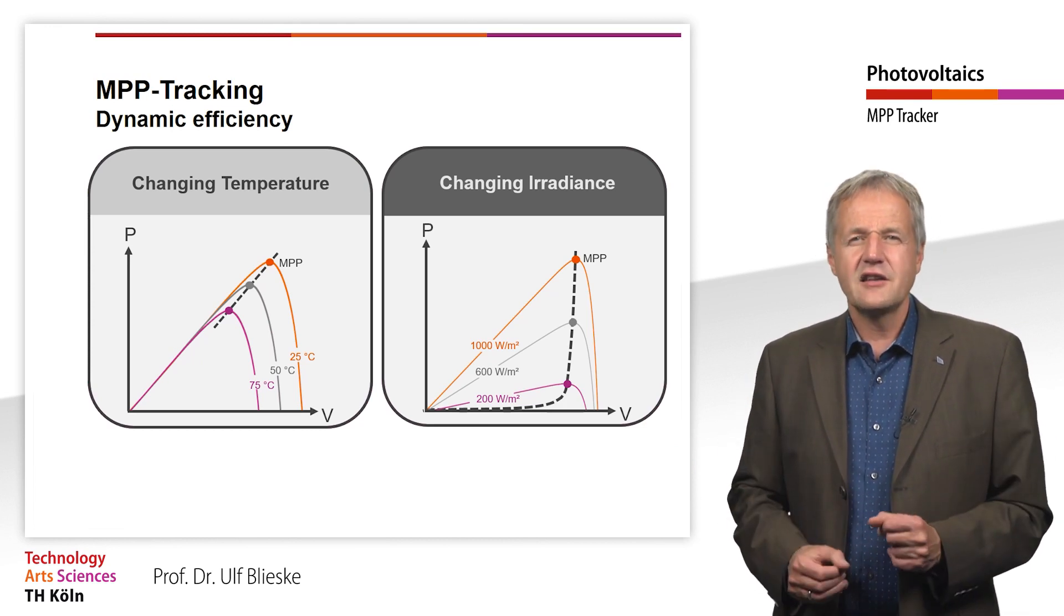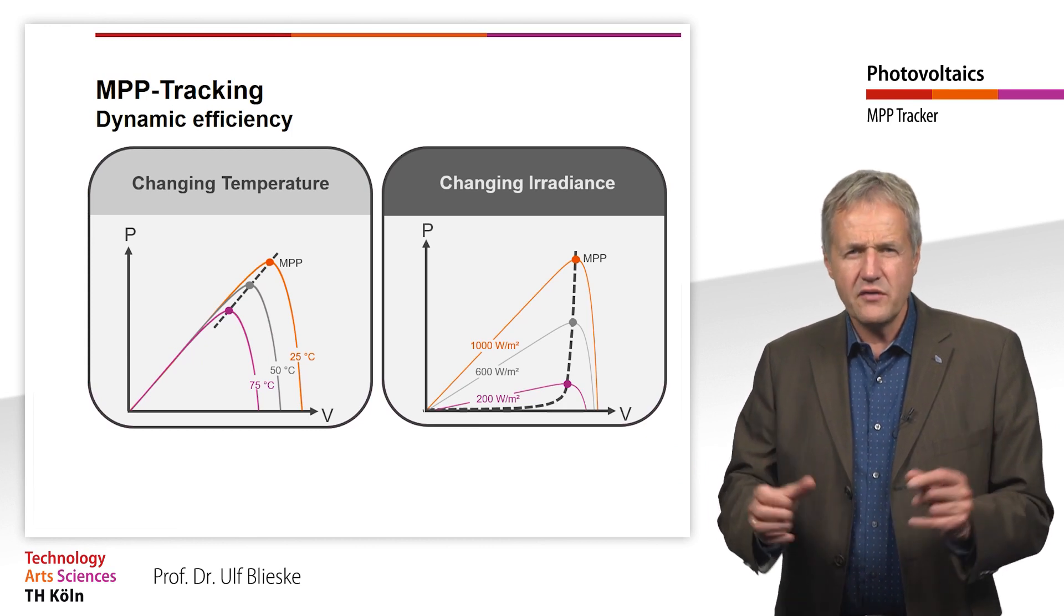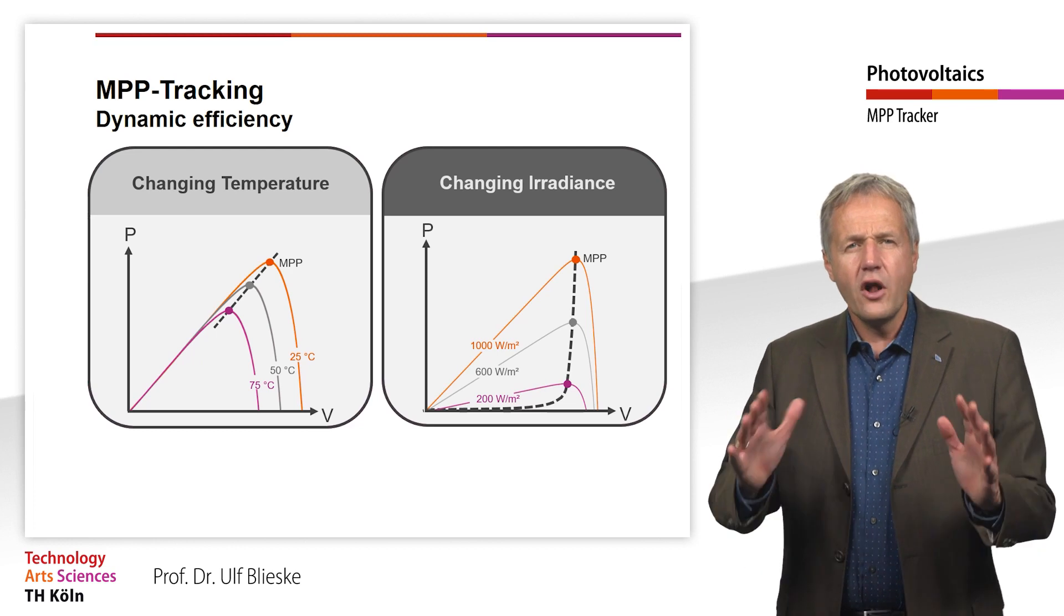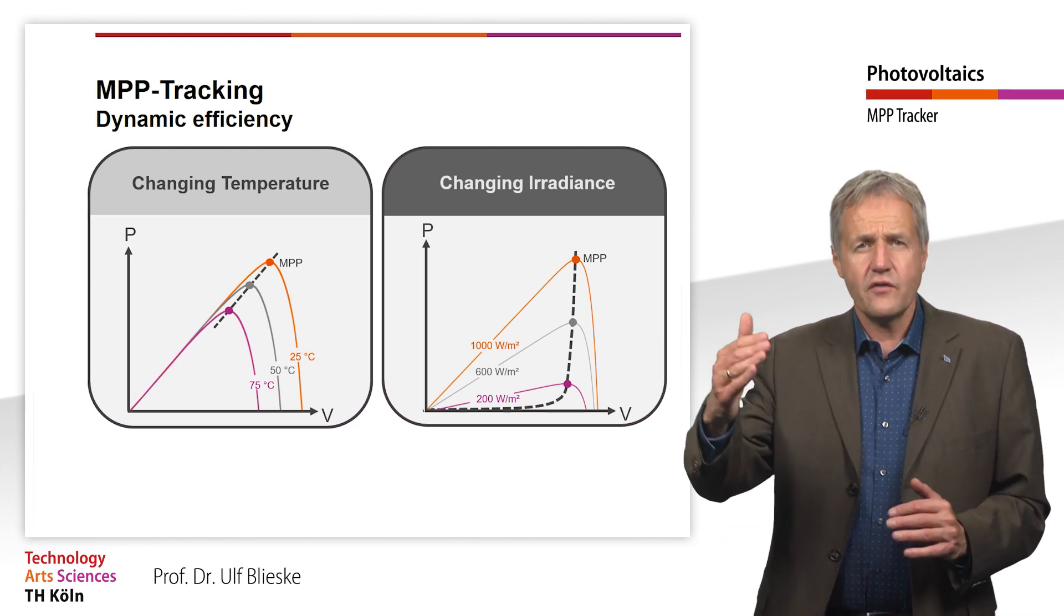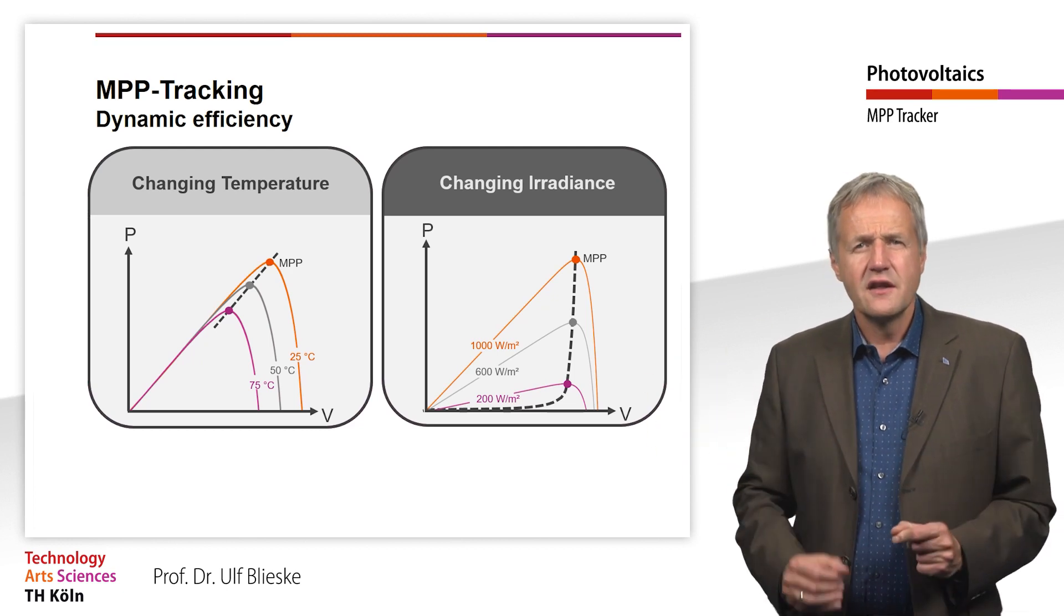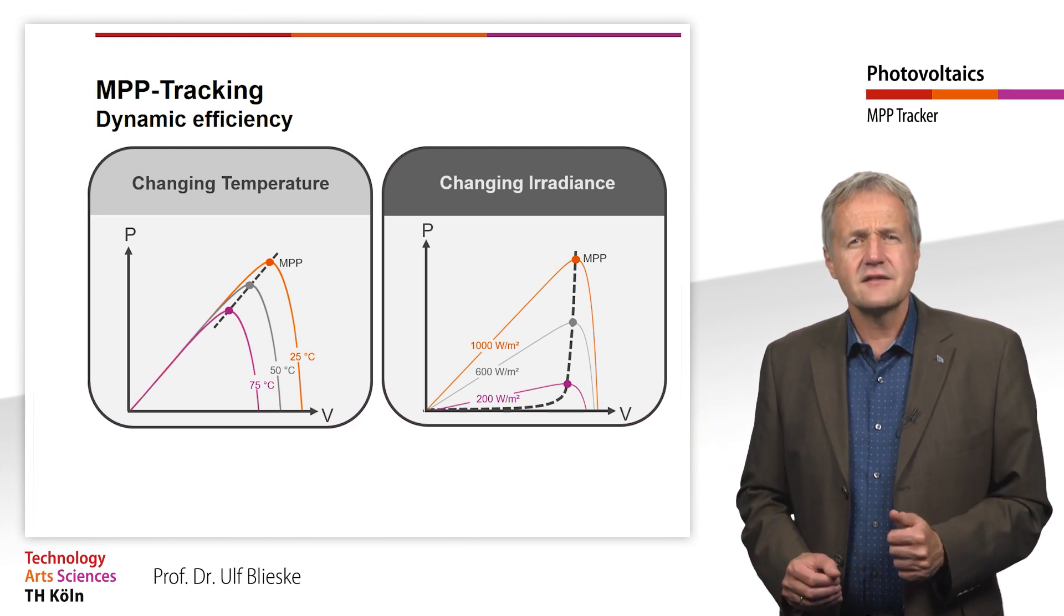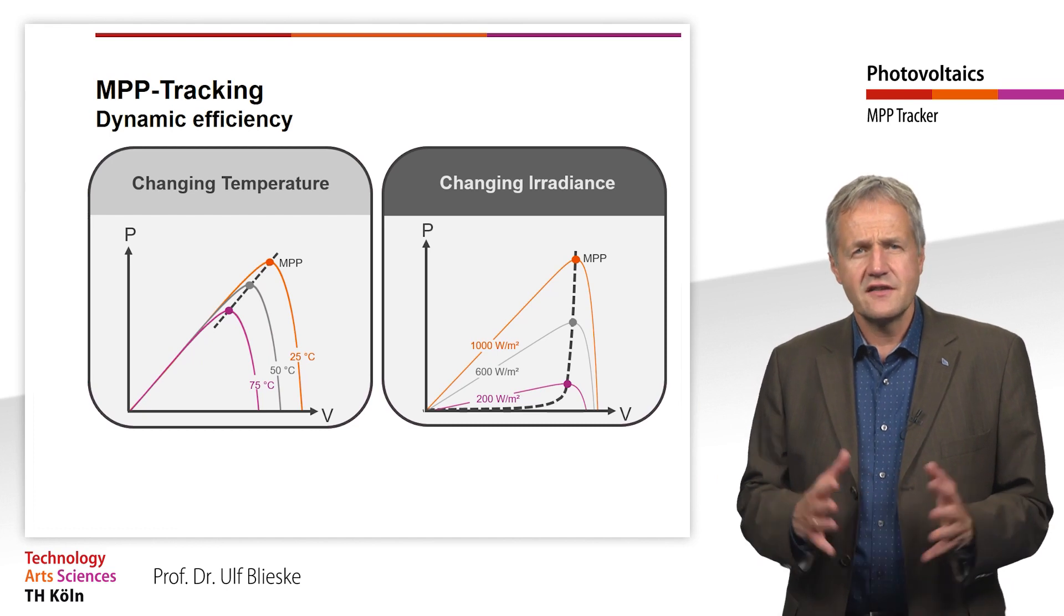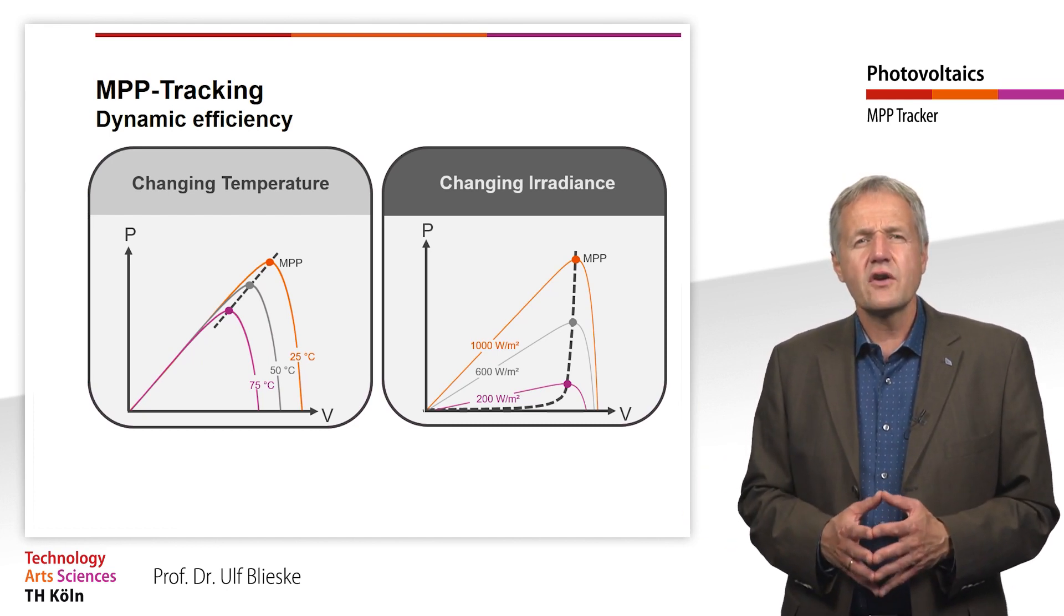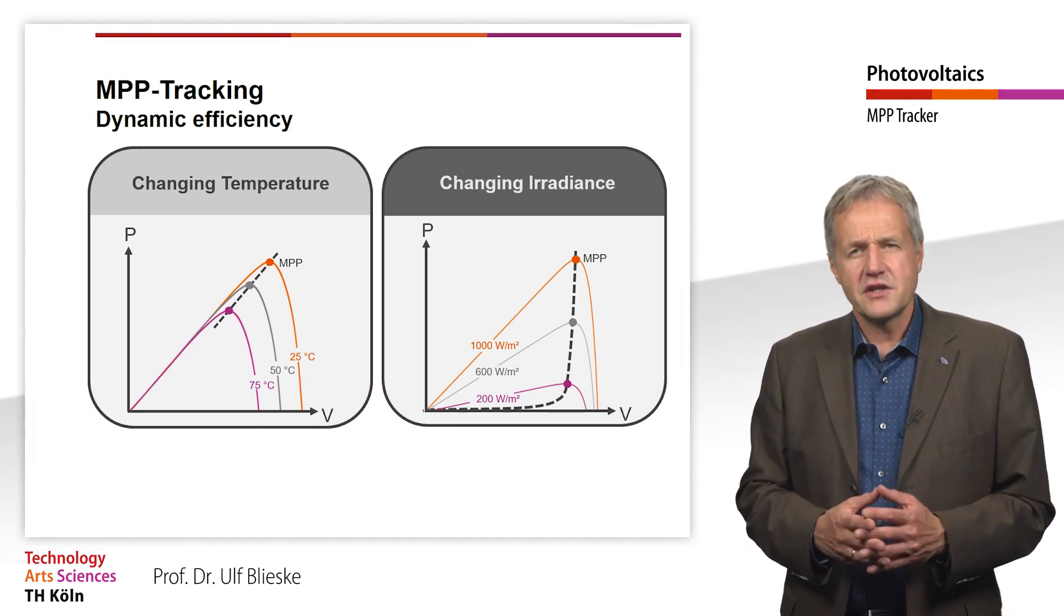Let's look at the dependence of the MPP voltage on the irradiation. The MPP voltage remains almost constant above 300 W per square meter. If the irradiation changes in this area, this does not lead to any major changes in the MPP voltage.